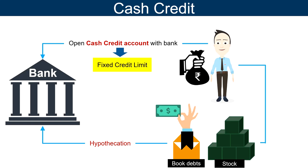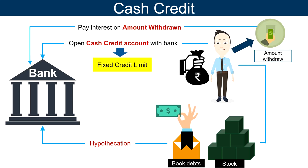This limit may vary from bank to bank and customer to customer. The bank charges interest on the amount actually withdrawn by the customer and not on the limit sanctioned. Moreover, the amount is repayable on demand, i.e., the bank may ask for its repayment any time. Further, as the credit limit is based on value of securities pledged, it is changed accordingly.